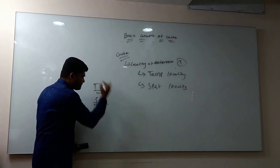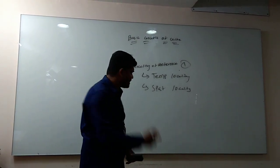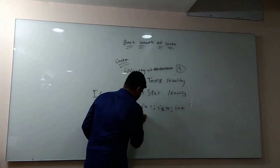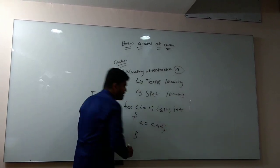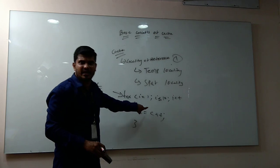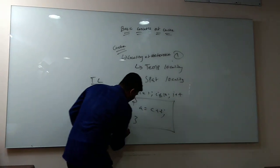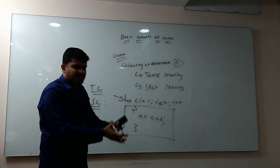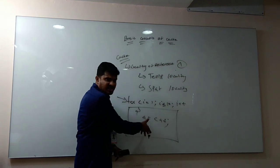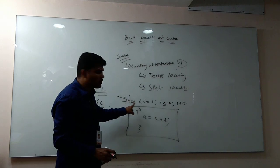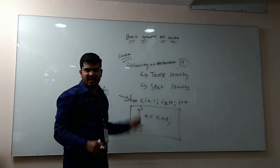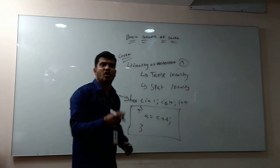Spatial locality says that if you are going to fetch one particular instruction — say for i equal to 1, i less than or equal to 10, i++, and a equals c plus something — when you are fetching one instruction at a time, don't only fetch that particular instruction; fetch the next associated couple of instructions, a group of instructions, and put them in the cache. The assumption is that if this instruction is fetched, in future the next instruction will always be called for as well, so the next time you need not go to RAM and fetch the same instruction again.